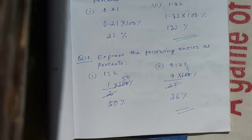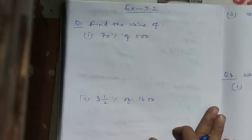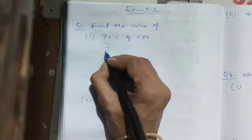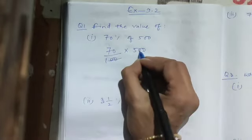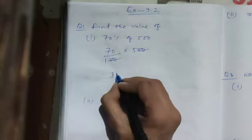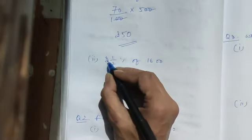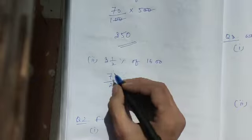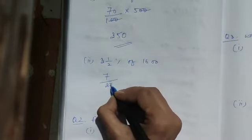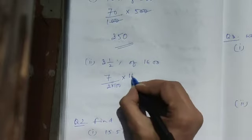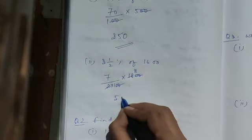Find the value of 70 percent of 500. Percent means divided by 100, and 'of' means multiply by 500. The two zeros cancel, leaving 70. Then 7 times 5 is 35, and with one zero it is 350 — that is our answer. Next: 3 and a half percent of 1600. Convert the mixed fraction: 2 times 3 is 6, plus 1 is 7, giving 7 by 2. Percent means denominator 100, 'of' means multiply by 1600. Cancel the zeros: 2 times 8 is 16, 7 times 8 is 56. So 56 is our answer.